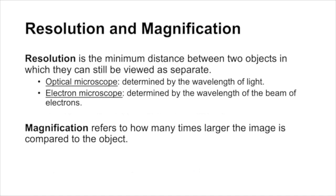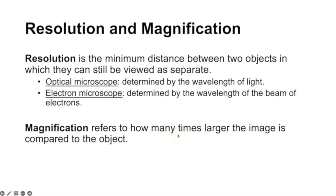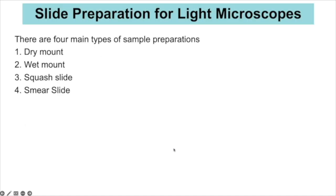Resolution is the minimum distance between two objects at which you can still view them as separate. In a light or optical microscope this is determined by the wavelength of light, whereas in electron microscopes it is determined by the wavelength of an electron. Magnification refers to how many times larger the image is compared to the actual object you are viewing.